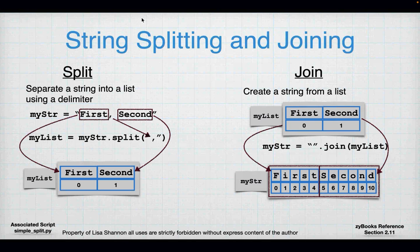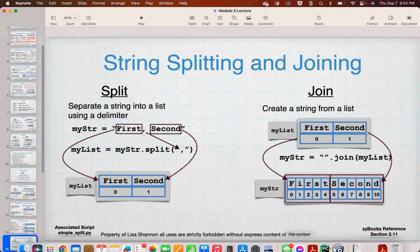For join, the dot notation works differently — the thing to the left of the dot is the delimiter string, and the argument is the list you want to join. So ''.join(my_list) joins with no separator and the strings run together, while ','.join(my_list) puts a comma between each element.